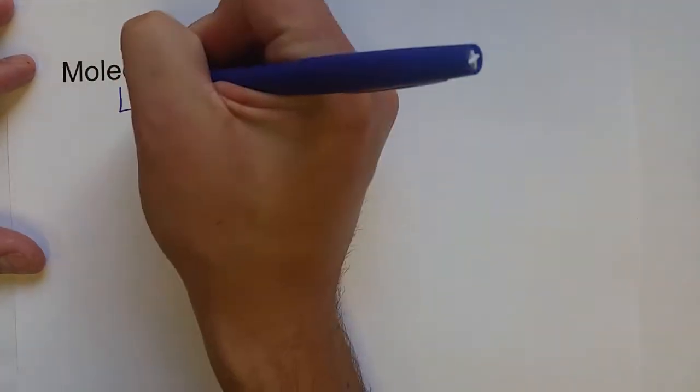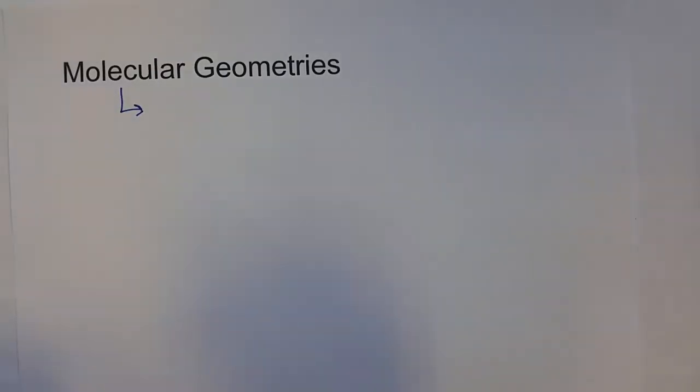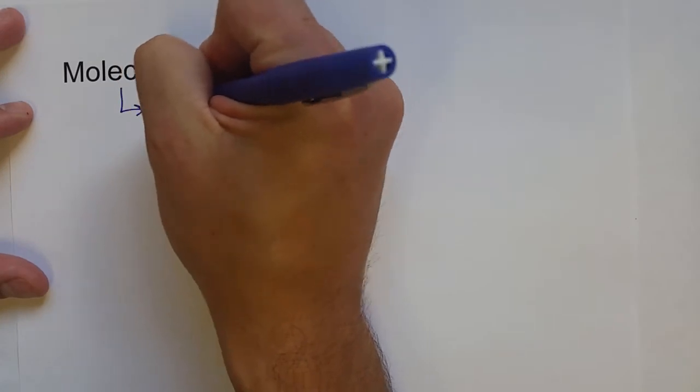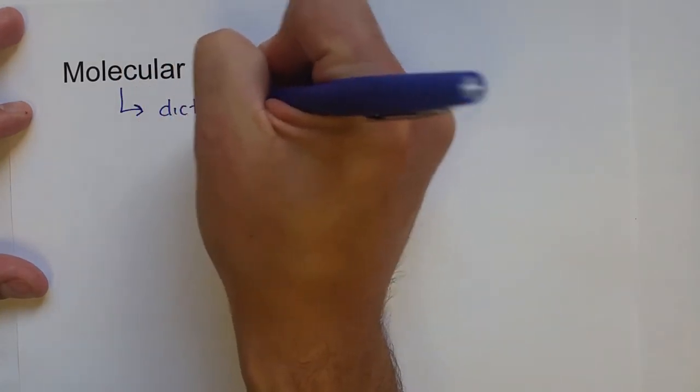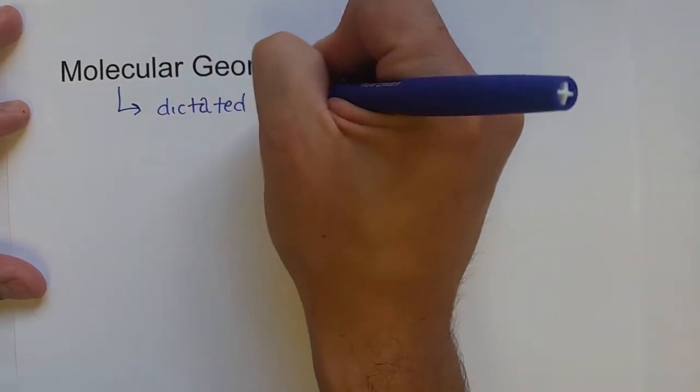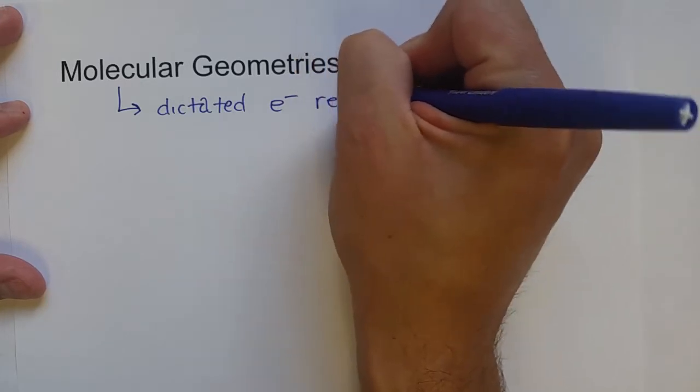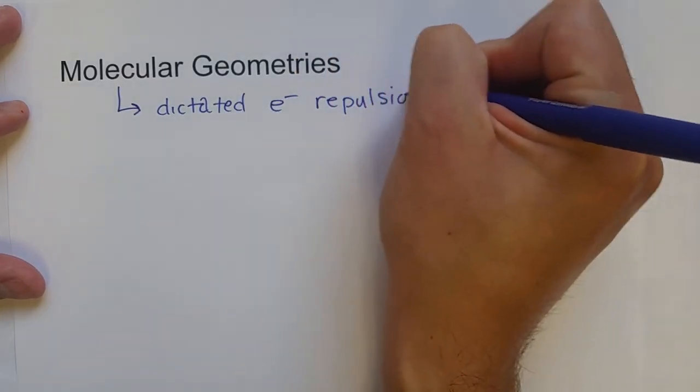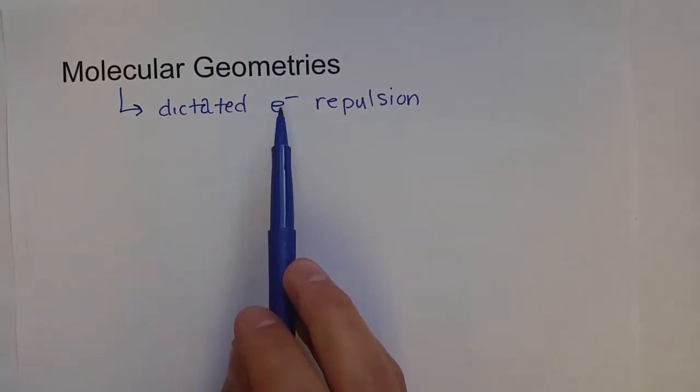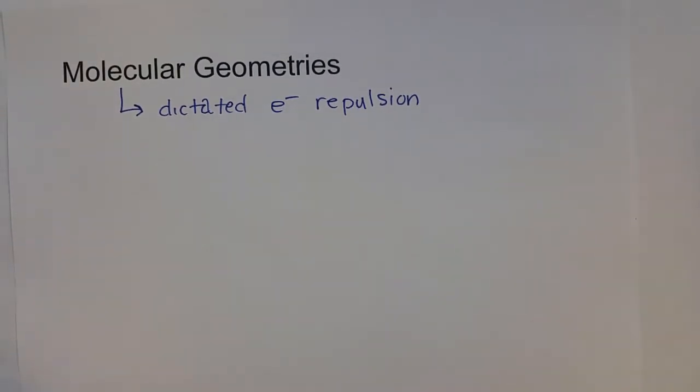Okay, so this is where atoms are at in three-dimensional space, and it's dictated by electron repulsion. Alright, so we know that electrons are negatively charged, and that means they will repel each other.